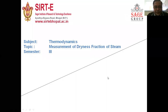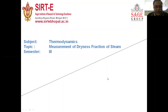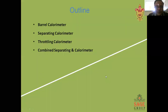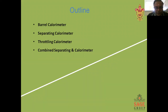Good afternoon, dear students. Today I will discuss the measurement of dryness fraction of steam. This is part of Unit 3, subject name Thermodynamics. The outline of today's lecture covers: barrel calorimeter, separating calorimeter, throttling calorimeter, and combined separating and throttling calorimeter.